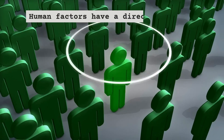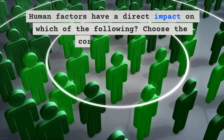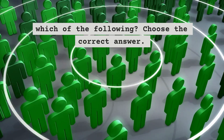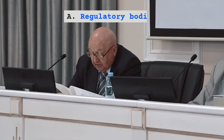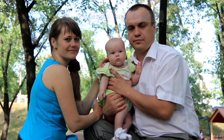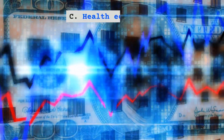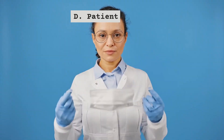Question two: Human factors have a direct impact on which of the following? Choose the correct answer. A) Regulatory bodies. B) Friends and family. C) Health economics. D) Patient safety.